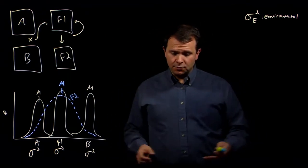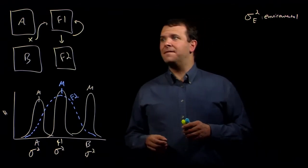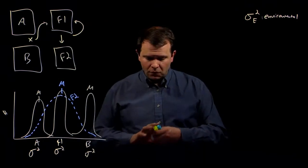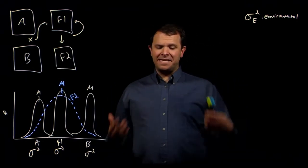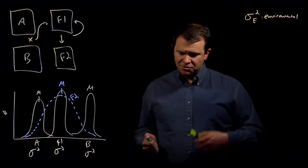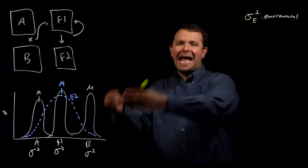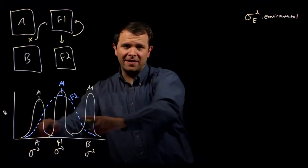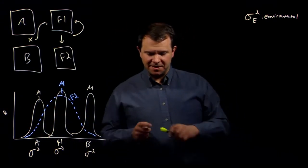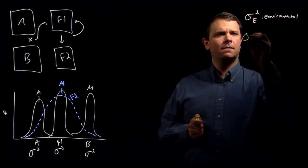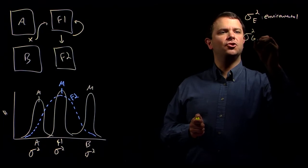Because of independent assortment, some plants have more alleles from this strain, some plants have more alleles from that strain. This additional variation due to genotypic variation gets added to the total variation of the phenotype. And so we write this genotypic variance, σ²G.